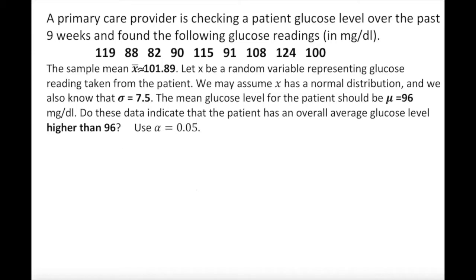A couple of important things to note here. X has a normal distribution — that is the big one. We also have n, the significant level, and the population standard deviation. Since x follows a normal distribution — regardless of sample size — and we know the population standard deviation is 7.5, we are going to use the Z-statistic.